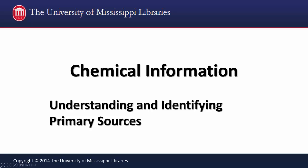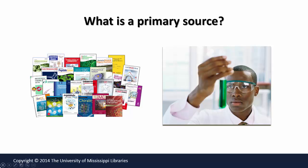The purpose of this tutorial is to help you understand what a primary source is and how to identify primary source articles in the chemistry literature. Most scientists officially communicate the results of their research by publishing scientific journal articles. These are often referred to as the primary literature. These articles represent first-hand accounts of research that were done by the authors.